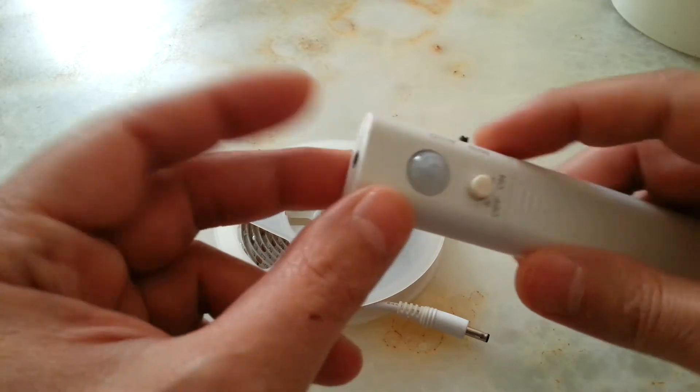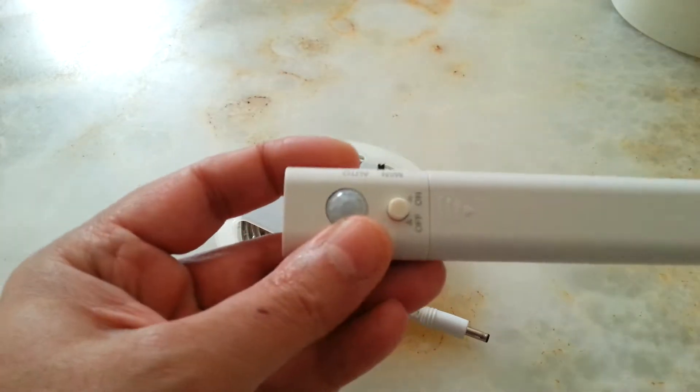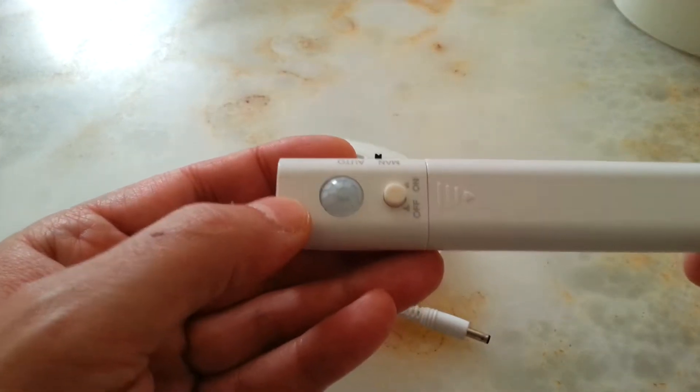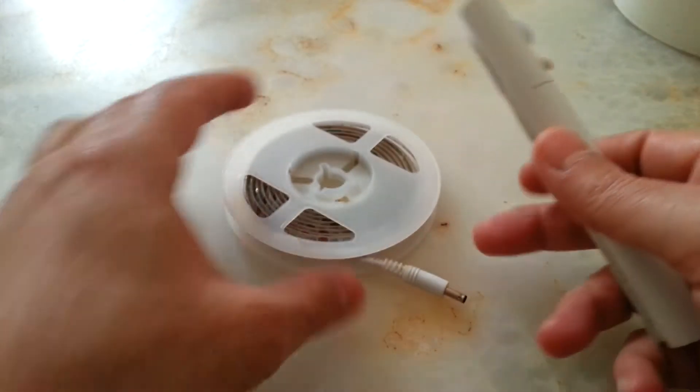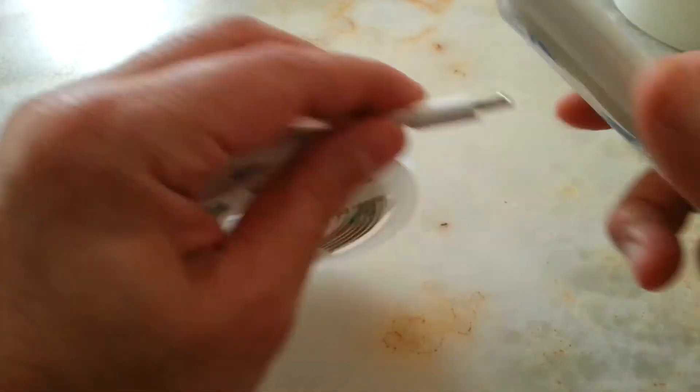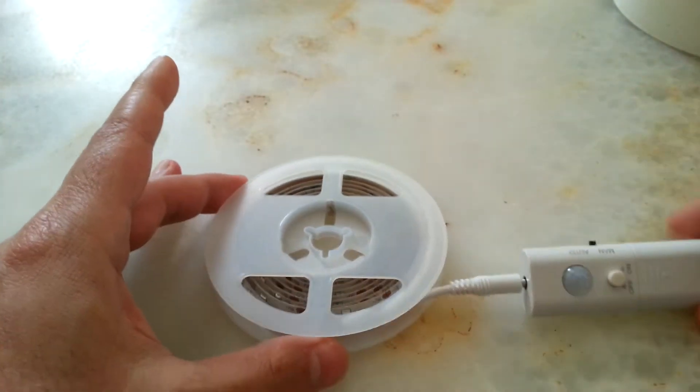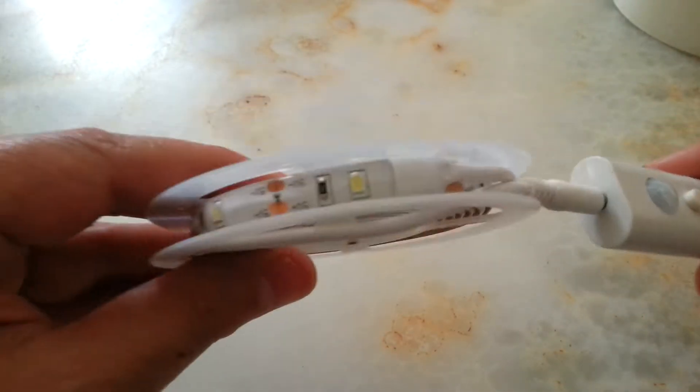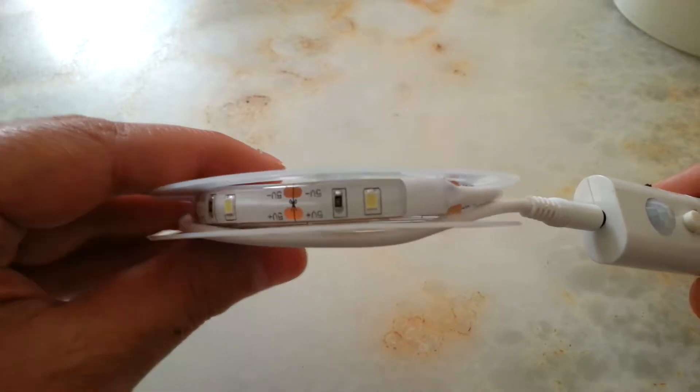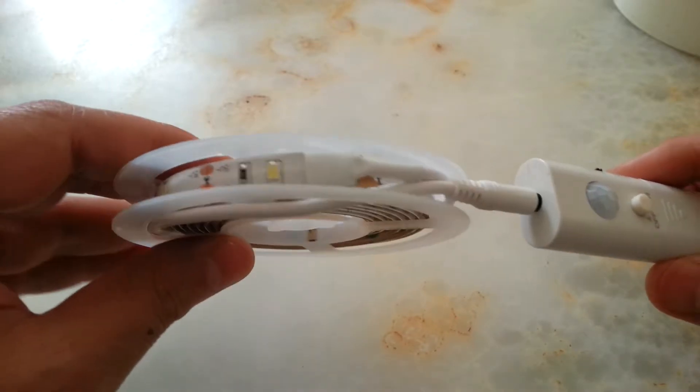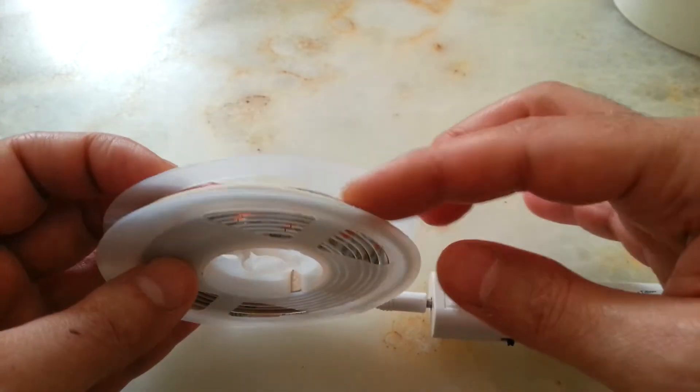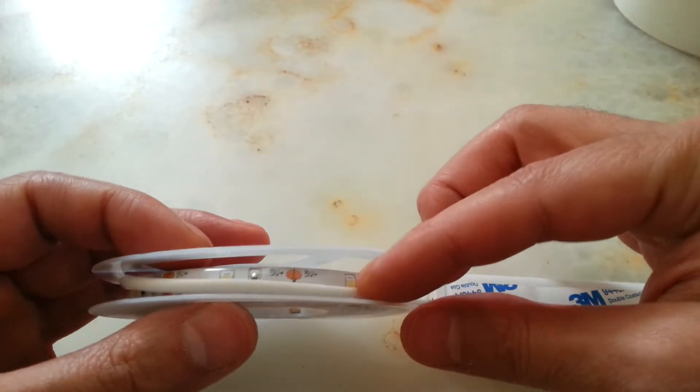It came with this 1 meter and a half LED strip which has 45 LEDs in there. They are not bad and they are waterproof.